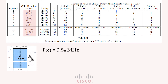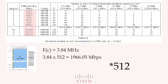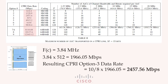To sample 512 bits of IQ, the data rate is 3.84 multiplied by 512, which equals 1966.08 Mbps. Considering the CPRI data is encoded before sending and we use 8b/10b encoding, for CPRI option 3 the resulting line rate is 2457.6 Mbps.